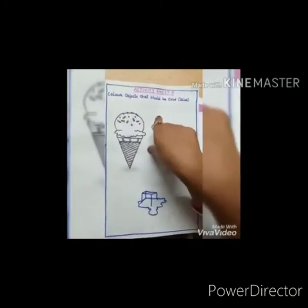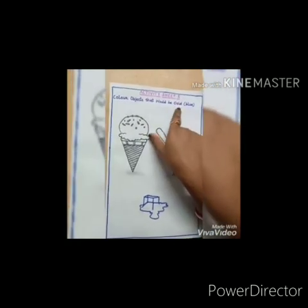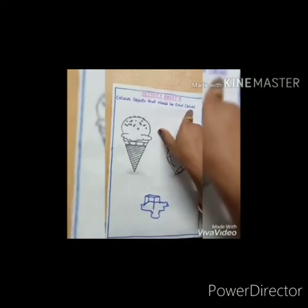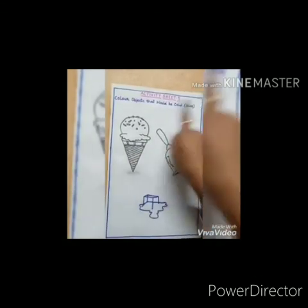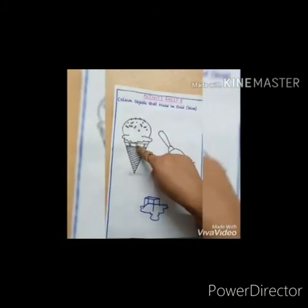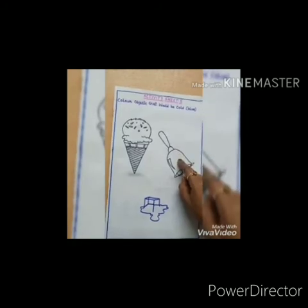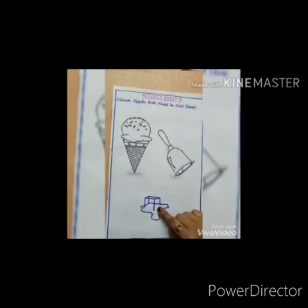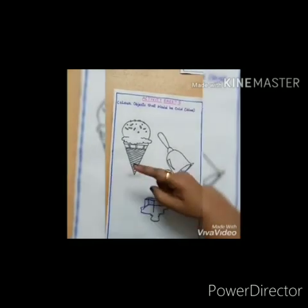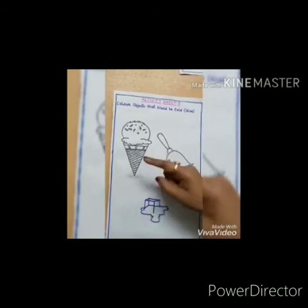Children, now you have to find the cold objects and colour them with the colour given in the bracket. What is the colour given here? Blue. You have to find out the cold objects and colour them with blue. Is the ice cream cold? Yes, it is. Is the bell cold? No. Is the ice cold? Yes. Now you have to colour only the cold objects with blue in the same way. Let's go.